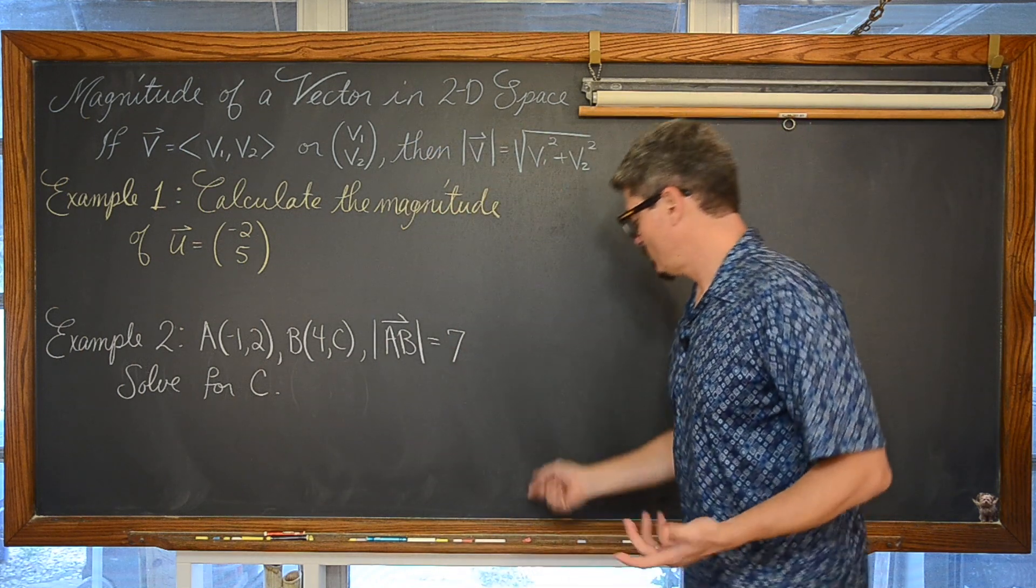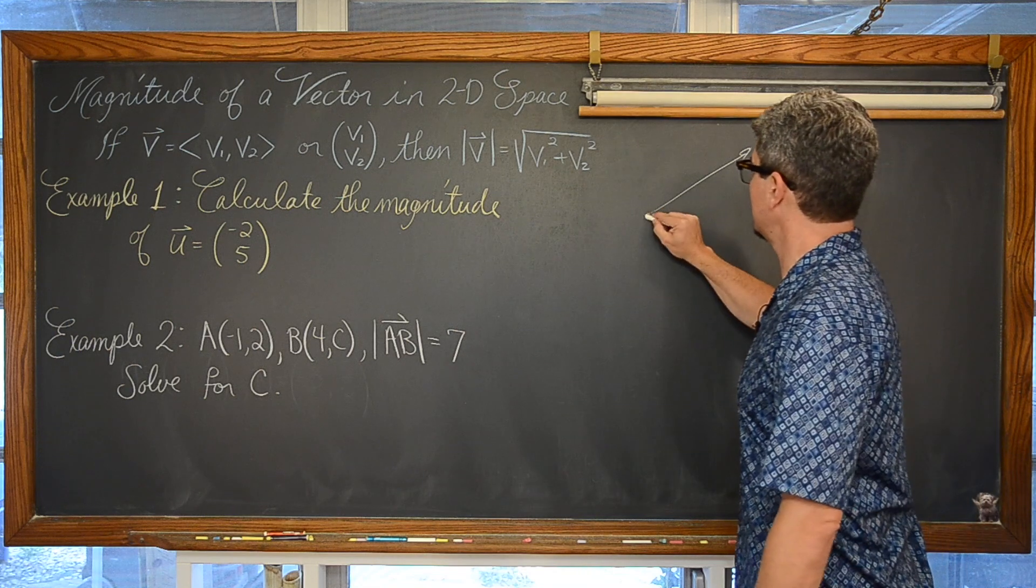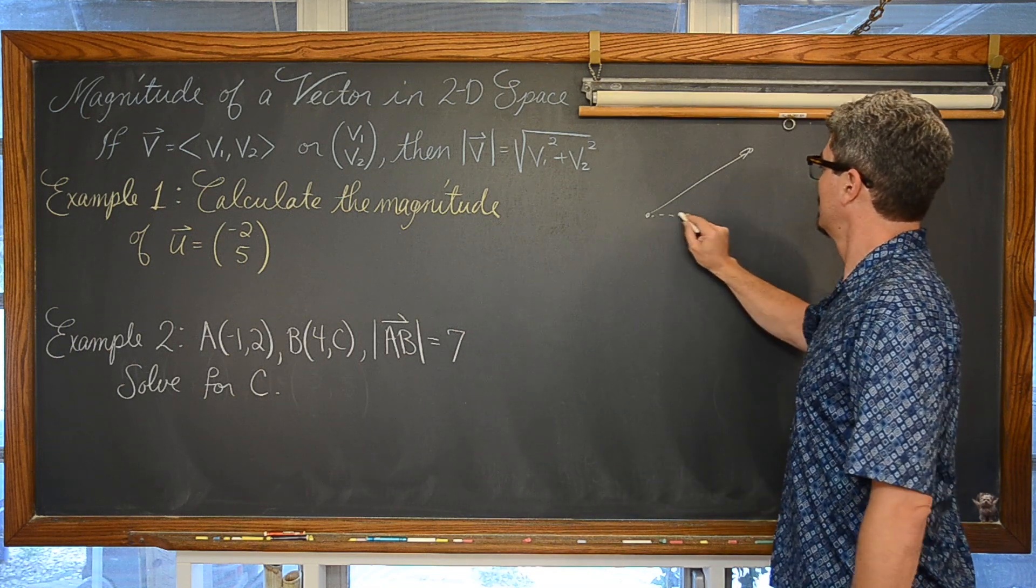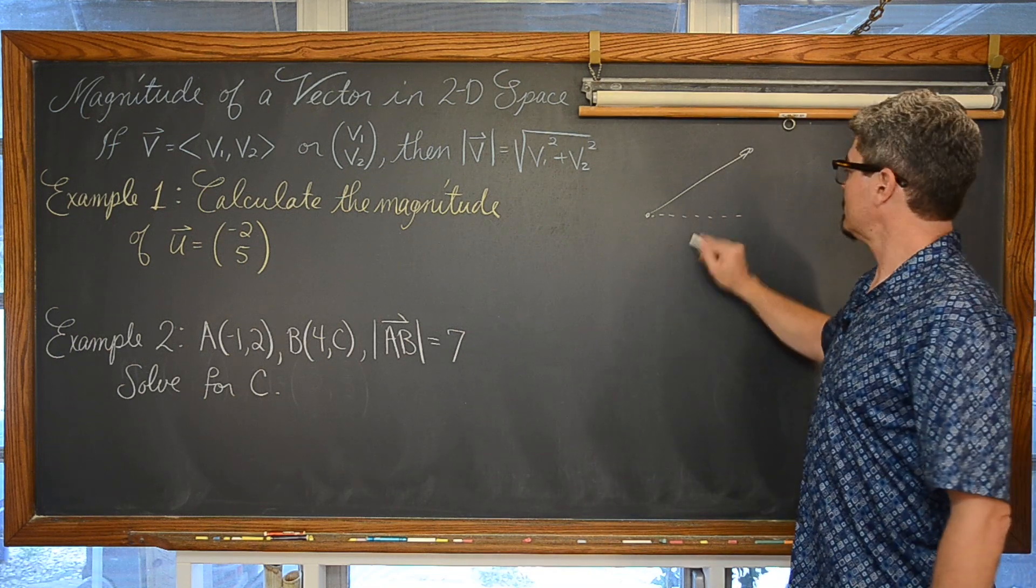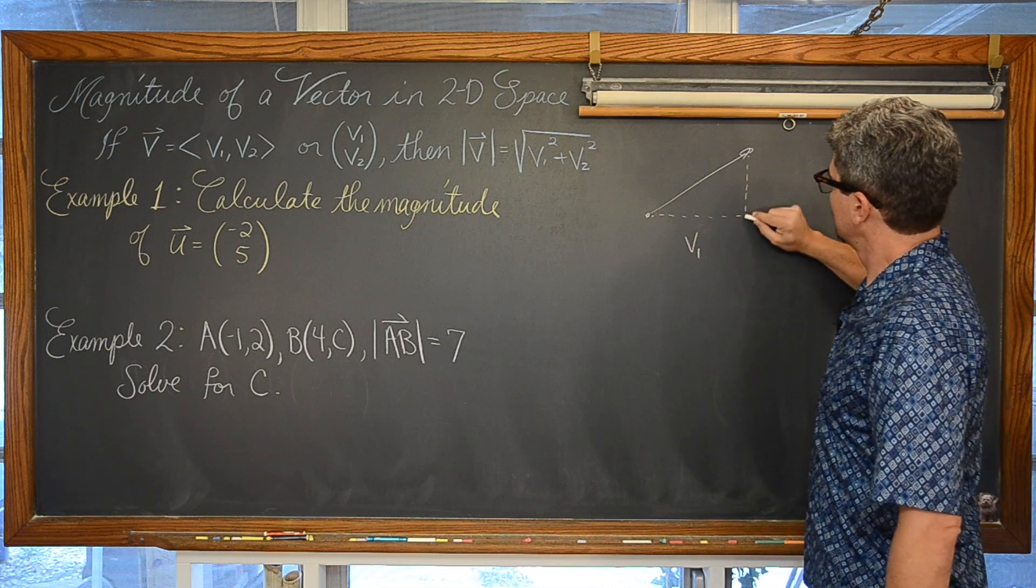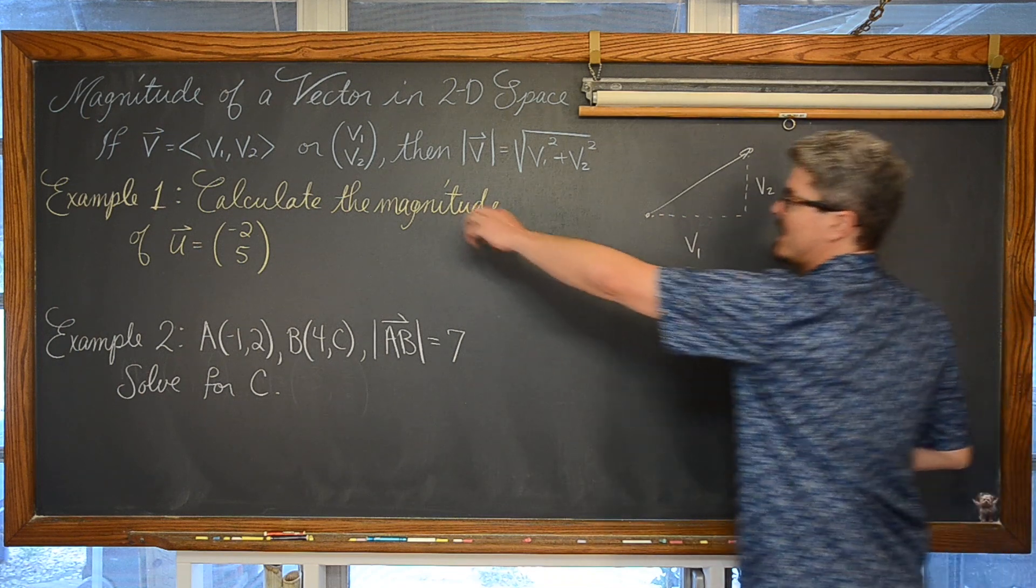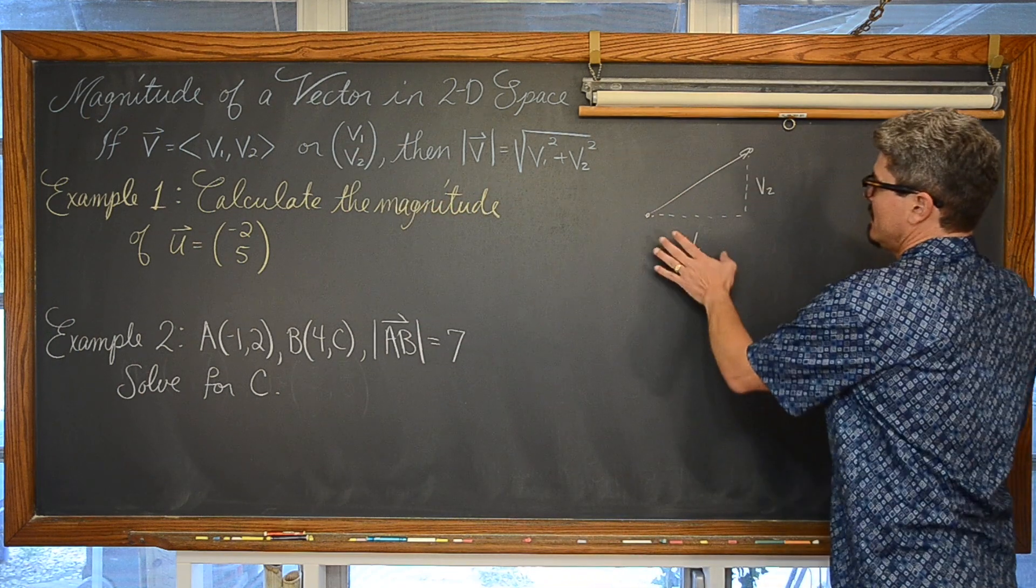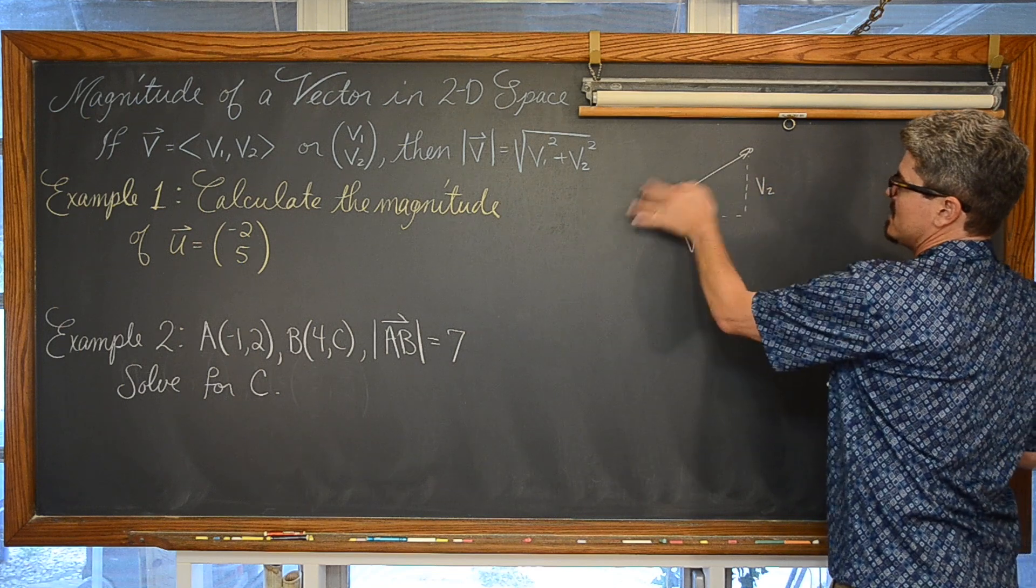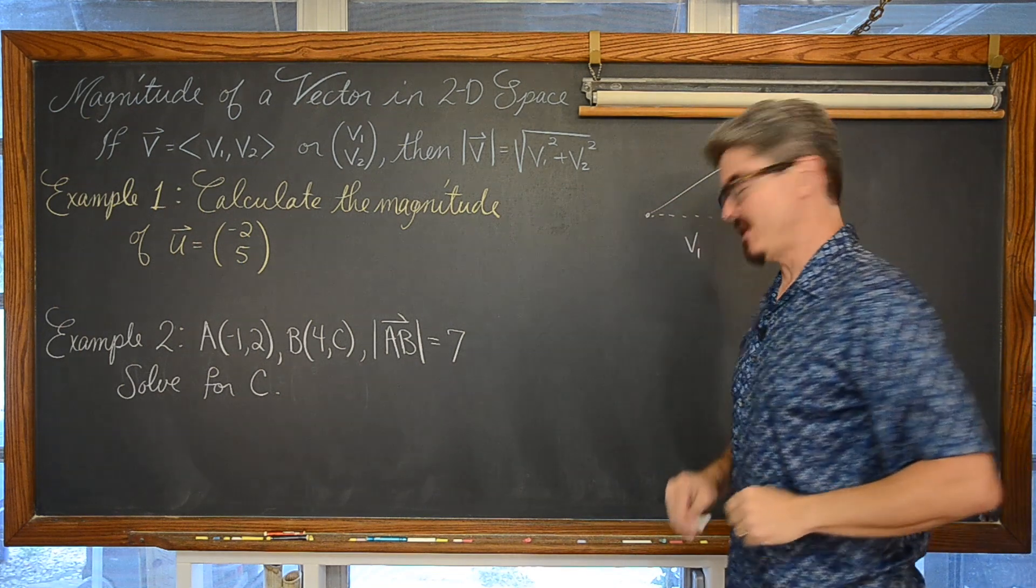So when you look at some vector going off in space with an initial and terminal point, well the horizontal distance and the vertical distance, at least to match up with this notation, a squared plus b squared is equal to c squared, the length of that line segment, the magnitude of that vector.